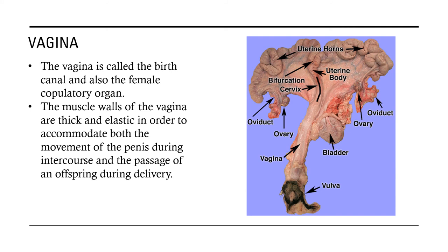Next is the vagina, called the birth canal and also the female copulatory organ — similar in function to the penis. The muscle walls of the vagina are thick and elastic in order to accommodate both the movement of the penis during intercourse and the passage of an offspring during delivery. The vagina connects to the main body of the uterus.